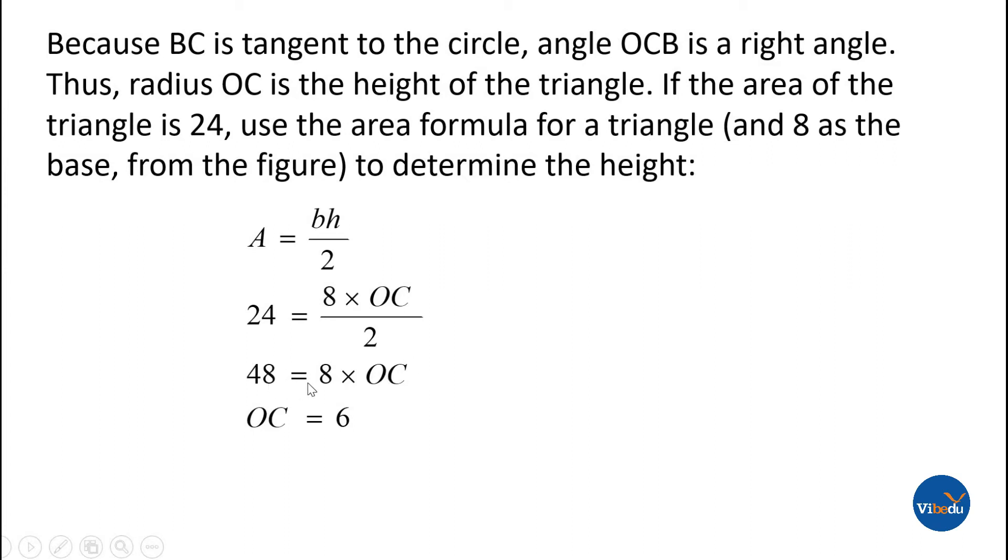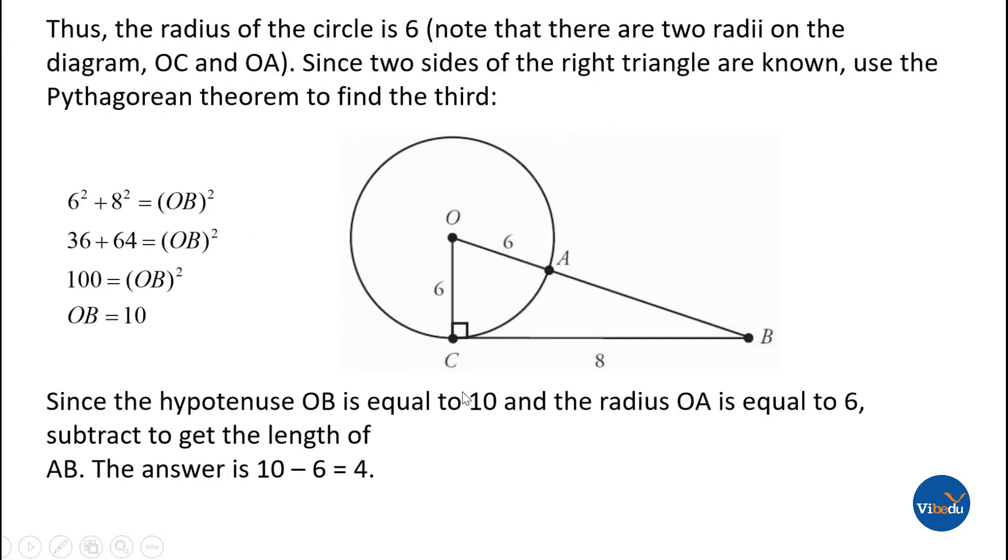48 equals 8 times OC, so OC equals 6. OC equals 6, that means the radius is 6. OA is also a radius. Now we need to find AB.